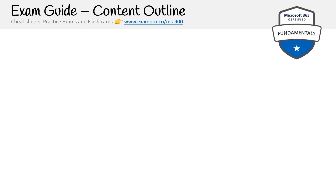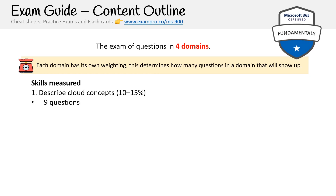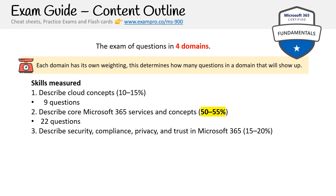For the contents of the exam, it is composed of four domains, each with its own weighting that determines how many questions will appear. Domain one, Cloud Concepts, is 10 to 15%. Domain two, Core Microsoft 365 Services and Concepts, is the largest at 50 to 55% of the questions — this is where the most questions come from.